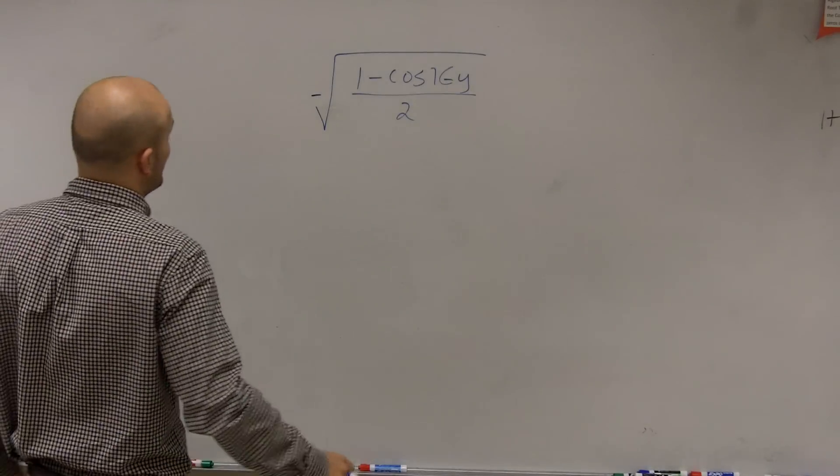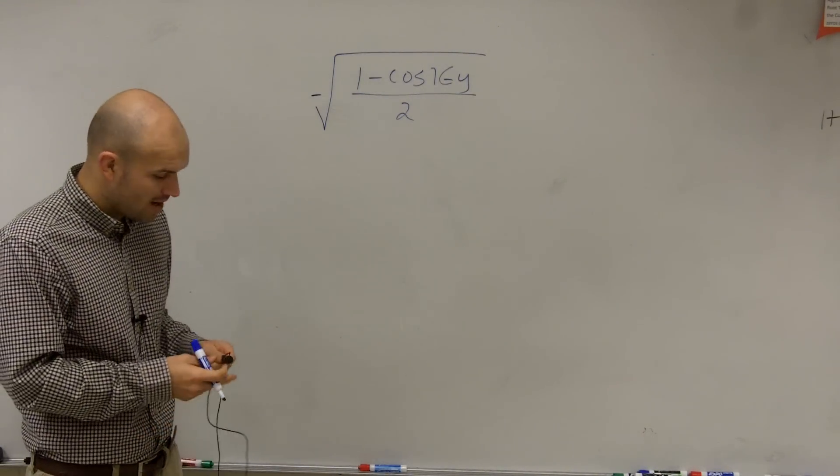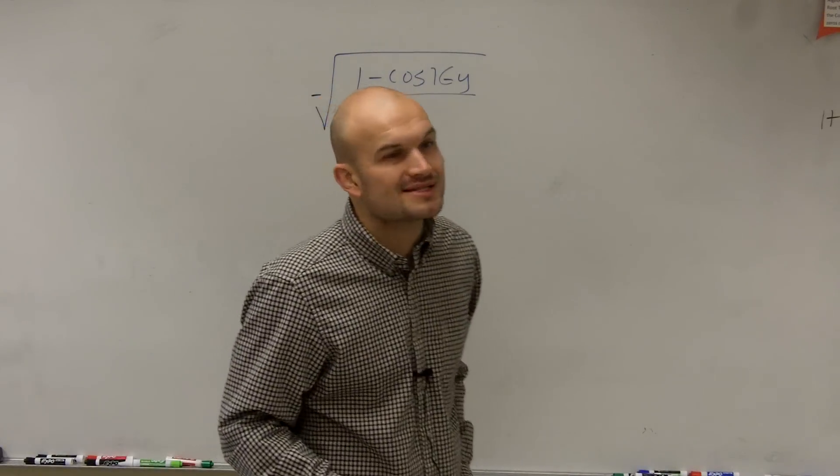OK, so what I have here is a negative square root of (1 minus cosine of 16y) divided by 2. And what we want to do is just simplify this.